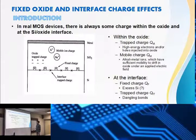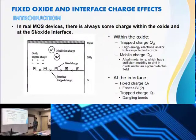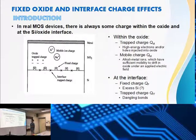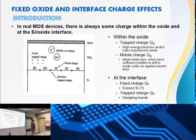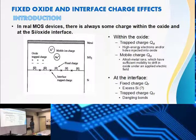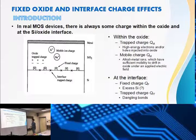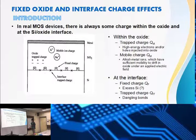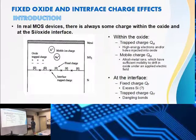In real MOS devices, there is always some charge within the oxide and at the SiO2 interface. Within the oxide there are trapped charges QOT - high energy electrons and/or holes injected into oxide. Then we have mobile charge QM, metal ions which have sufficient mobility to drift in oxide under an applied electric field. At the interface we have fixed charges QF, excess Si, trapped charges QIT, and dangling bonds.